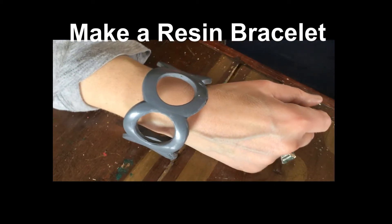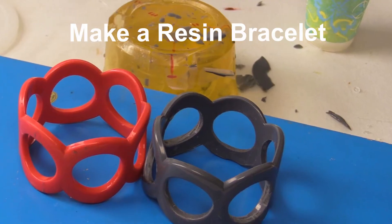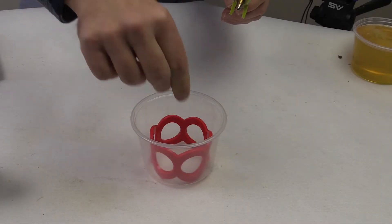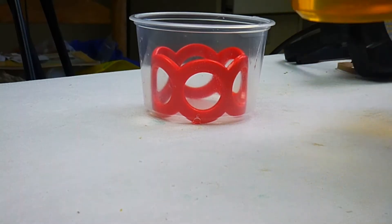How to Duplicate a Resin Bracelet Using Composite Mold Reusable Mold Making Materials. To start, hot glue the original bracelet or master to the bottom of the container.